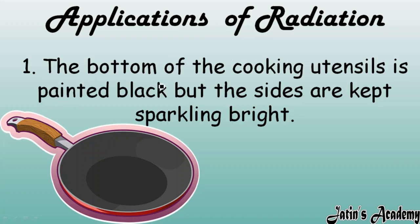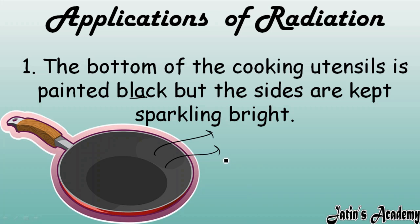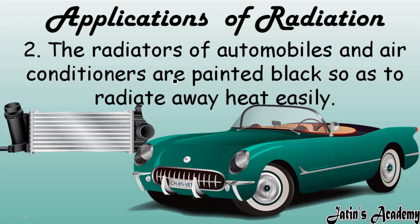First application of radiation: the base of cooking utensils is painted black. Black being a good absorber of heat helps utensils absorb more heat from the fire, cooking food efficiently. However, the sides of cooking utensils are painted bright/shiny so that heat present inside the pan is reflected back inward rather than emitted outward, ensuring food cooks properly.